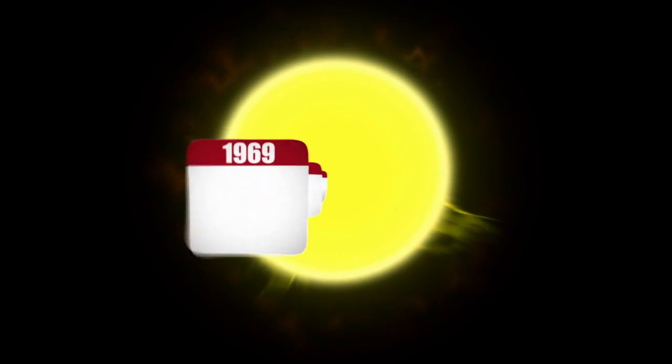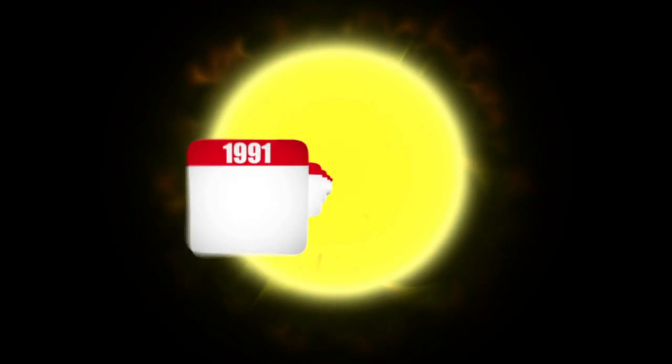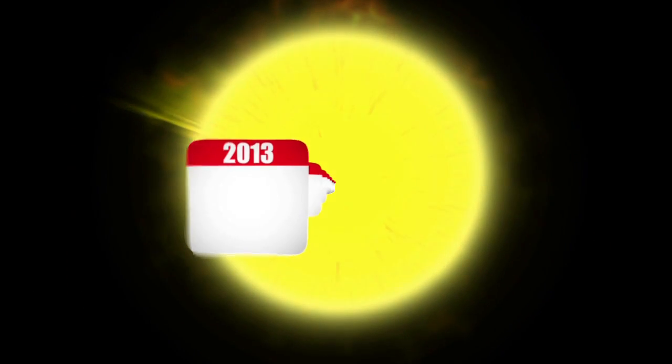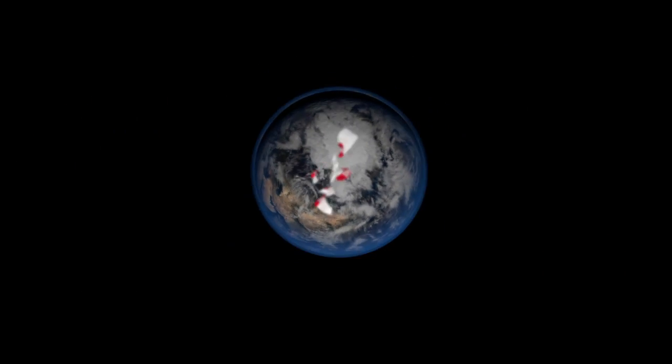Each solar cycle appears to last an average 11 years, culminating in serious magnetic storms. The current cycle is due to reach a climax in 2013. Scientists are already warning of potential disruption to terrestrial communication systems.